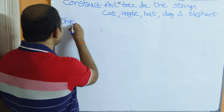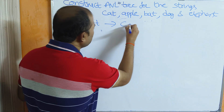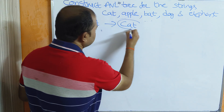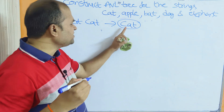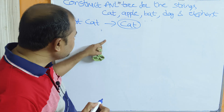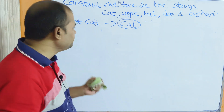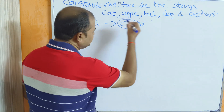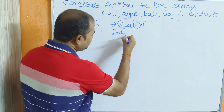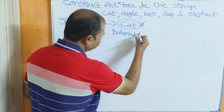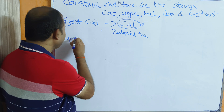Let us insert the nodes. The first node is 'cat', so insert cat — the first node becomes the root node. The balance factor for this node is: left subtree height is 0, right subtree height is 0, so 0 minus 0 equals 0. This tree is balanced because the balance factor is 0.